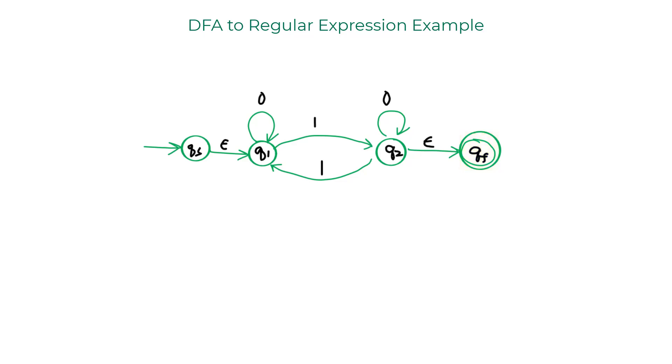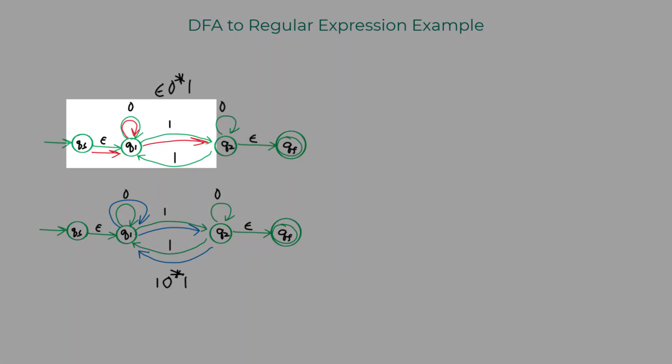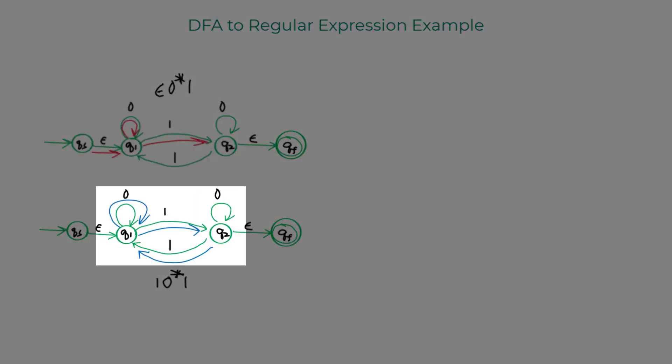Now we're going to rip one state after the other in this GNFA and simplify it to a two state GNFA where we would end up having a regular expression for the DFA. So let's start with Q1. If you're going to rip off Q1 from this GNFA, you'll have to take care about the path highlighted in red and the path highlighted in blue.